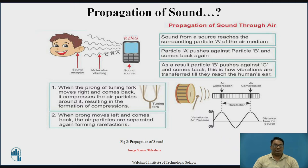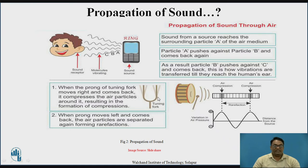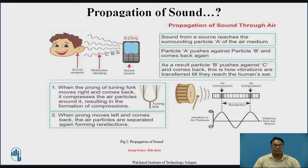We can take the example of a tuning fork. When we bang a tuning fork on a wooden plank, the prong of the tuning fork moves right and comes back. The tuning fork vibrating is denoted by colors shown in contrast — the dark color denotes the exact position of the tuning fork tongs. It compresses the air particles around it, resulting in the formation of compressions. When the prong moves left and comes back, the particles are separated again, forming the rarefactions. This is the most basic example of how sound propagates.